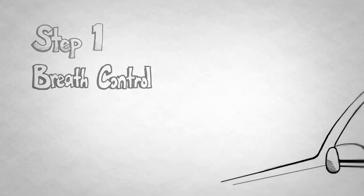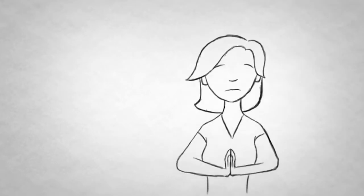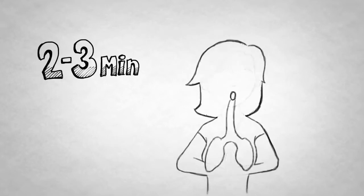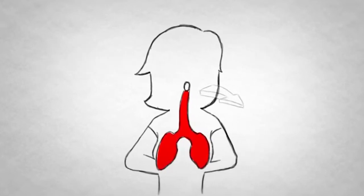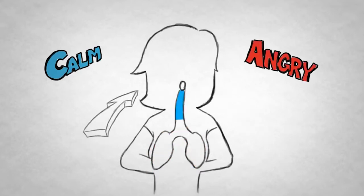Step one, control your breathing. When something pisses you off, instead of screaming or laying on the horn, take deep breaths. Spend two to three minutes breathing deeply in through your nose and out through your mouth. Imagine inhaling calm blue air and exhaling that red toxic air.